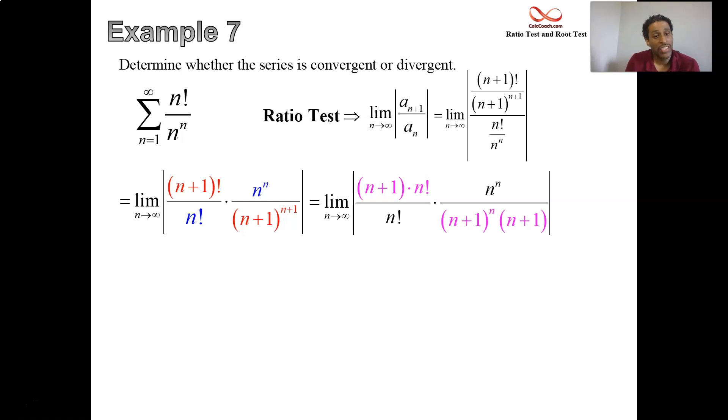It allows us to cancel the n factorials and then in a very strange way, this usually doesn't happen. Usually these fractions exist in their separate own little worlds and they don't interact. But here we have an n plus 1 as the numerator of the left fraction and an n plus 1 is the denominator on the right fraction. So we can cancel.